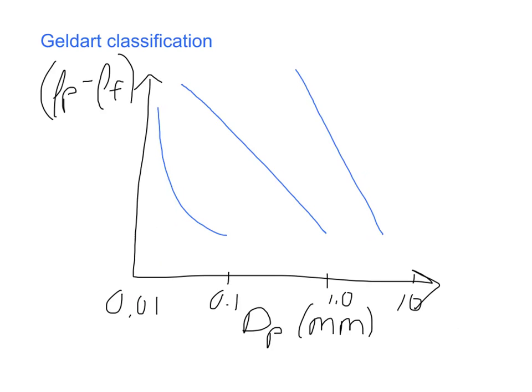So there are different types of fluidization. I mentioned the bubbling and the non-bubbling, and there are actually two other kinds as well. They have this classification system called the Geldart classification, which will classify the powders based on the particle diameter and the relative difference between the particle density and the fluid density.